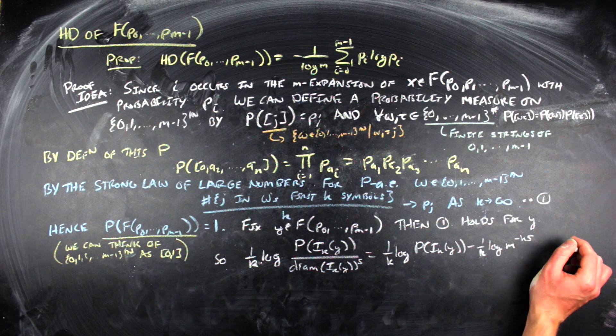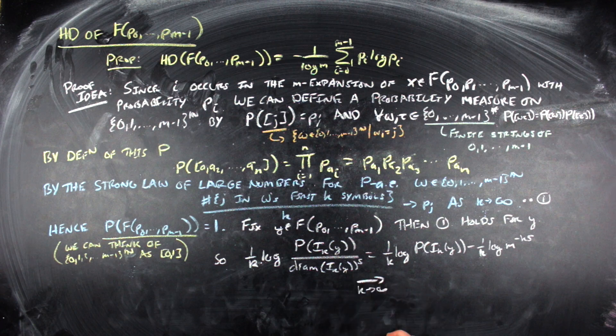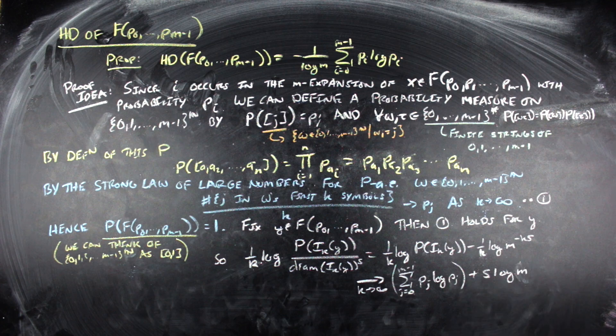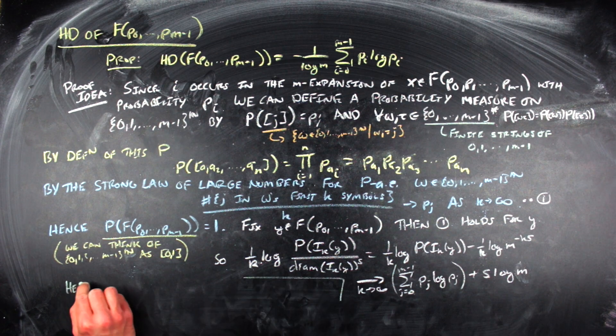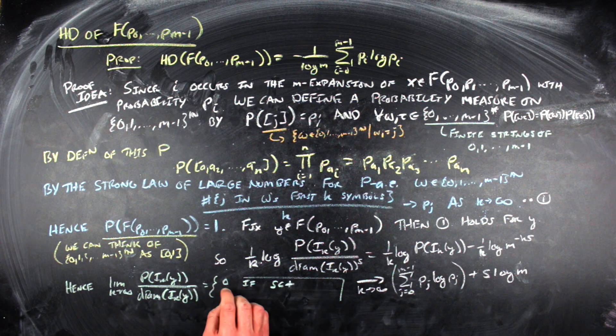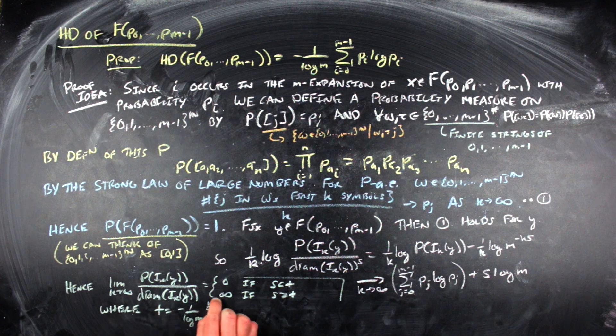Doing a little bit of algebra and evaluating as K goes to infinity, we see that this quantity approaches the sum J equals 0 to M minus 1 of P sub J log P sub J plus S log of M. This limit will be 0 if S is less than T, and it will be infinite if S is greater than T, where T is the proposed value of the Hausdorff dimension.